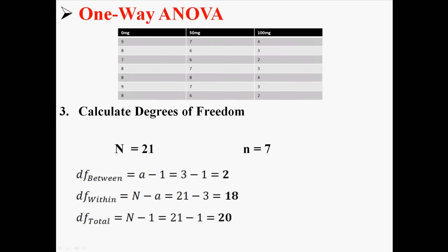So A is 3. So that makes our degrees of freedom between 2, our degrees of freedom within 18, and degrees of freedom total 20. Notice that total is just between plus within. 2 plus 18 equals 20. If between plus within don't equal total that means something went wrong.